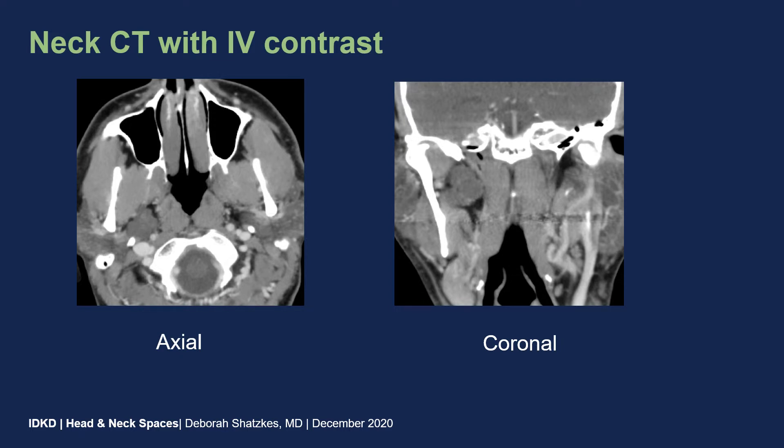He underwent neck CT with IV contrast. I'm not going to show you his mandibular lesion, which turned out to be a focus of cementoosseous dysplasia, but I am going to point out an incidentally discovered lesion on that neck CT. We have axial and coronal images, and we can see that there is some asymmetry on the right side, and there is a lobular low-density mass lateral to the nasopharynx.